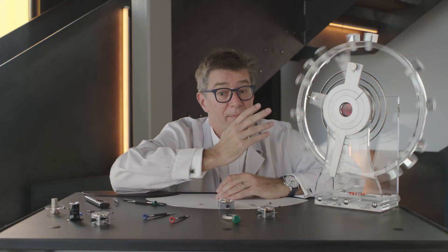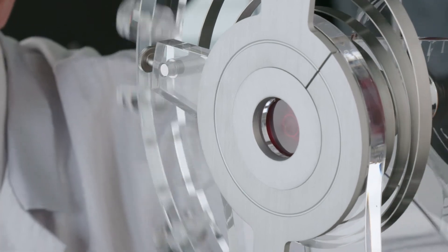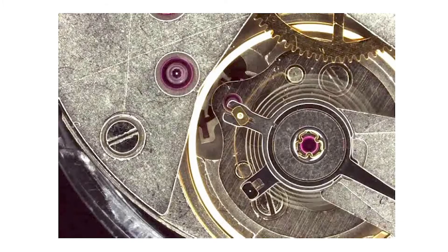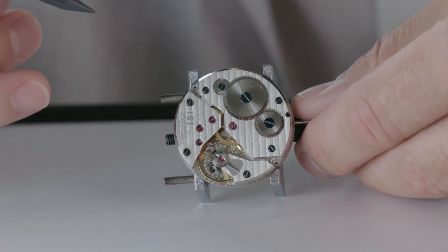The regular oscillations of the balance wheel regulate the speed at which the gear train rotates. The more regular this oscillation is, the more precise the watch will be. Let me sum up for you.